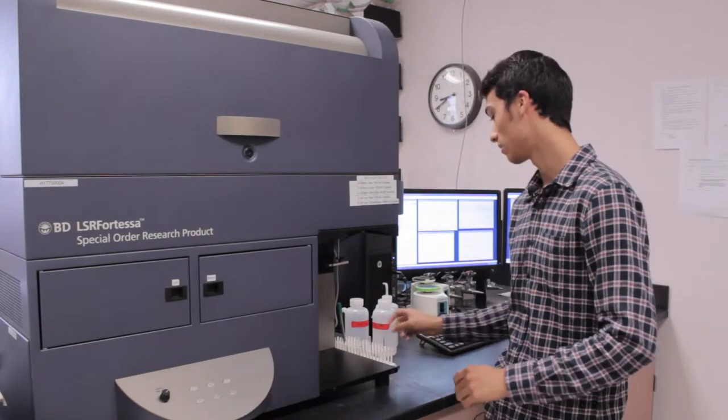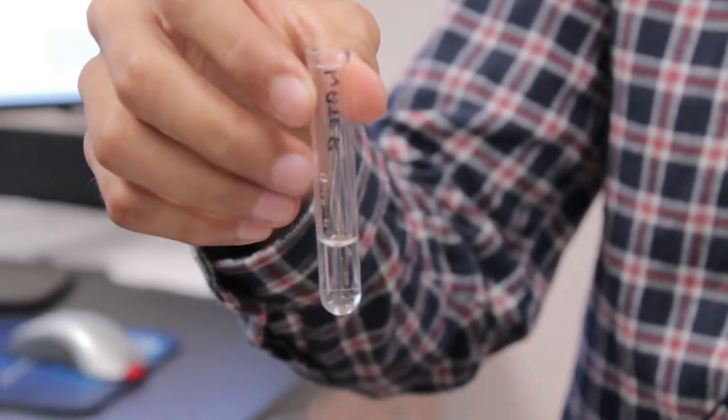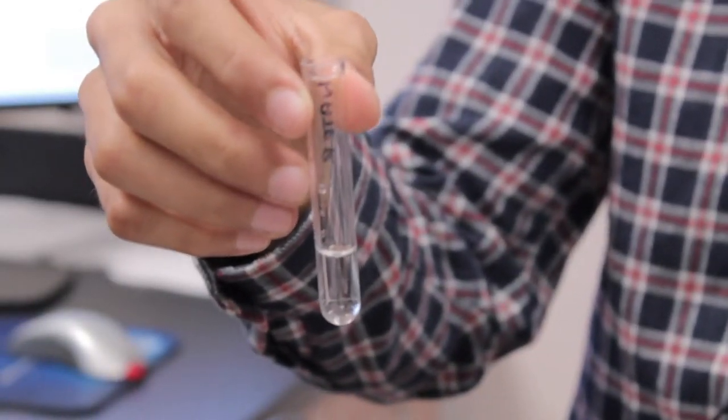In order to use this machine, you must first place the population of cells that you want to analyze in what is called suspension buffers. Once they are suspended, you may proceed to the next step and place the tube in this compartment.